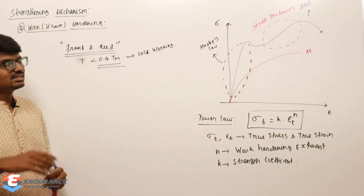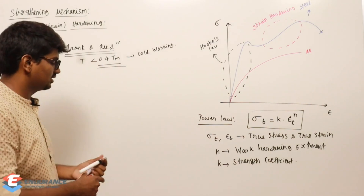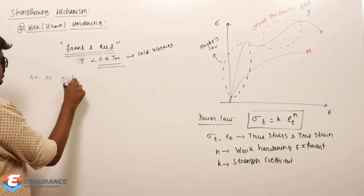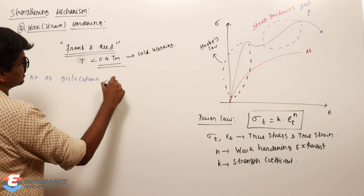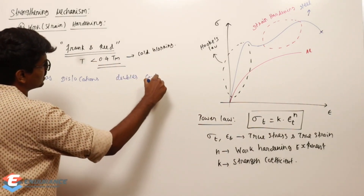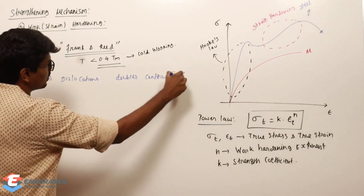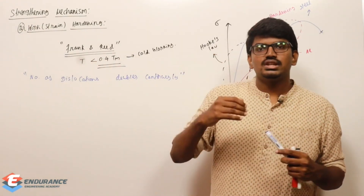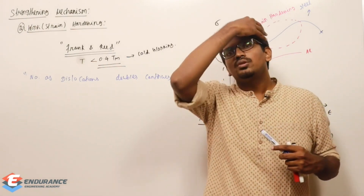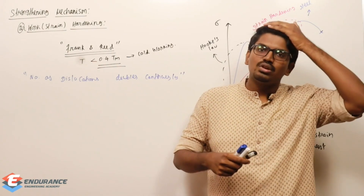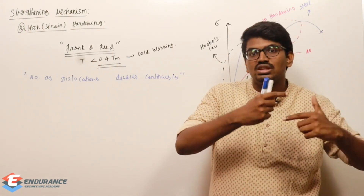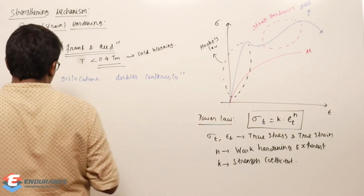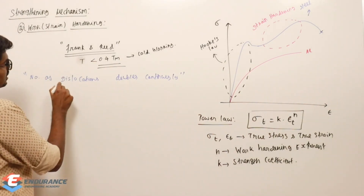When you cold work the material, the dislocation count doubles. This means if you keep on cold working, the number of dislocations continuously doubles: two becomes four, four becomes eight, eight becomes sixteen, sixteen becomes thirty-two, and so on.